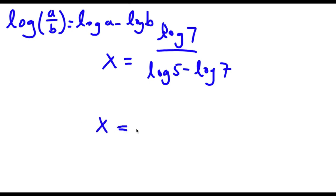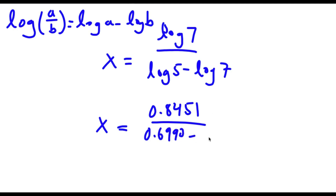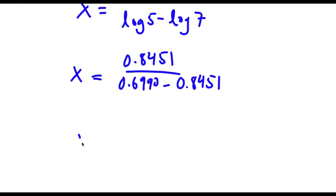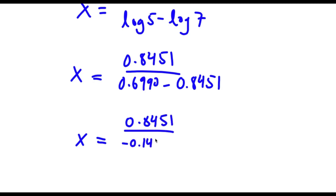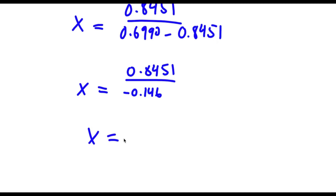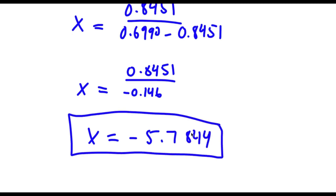So now log 7 equals 0.8451, over log 5 which equals 0.6990, minus log 7 again which is 0.8451. This equals 0.8451 over negative 0.146, and if you divide these two you get negative 5.7844. So this is our answer.